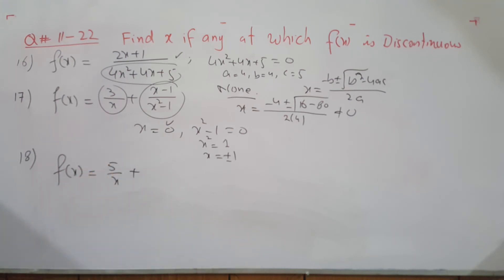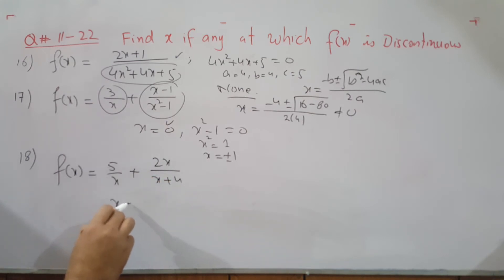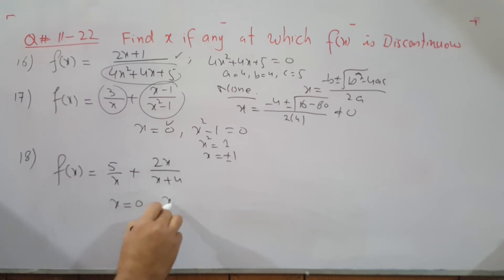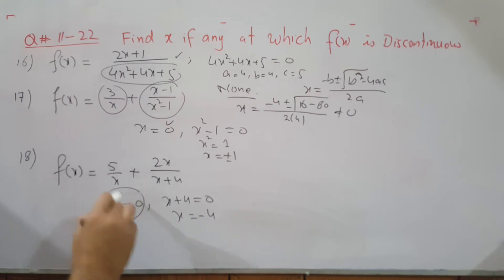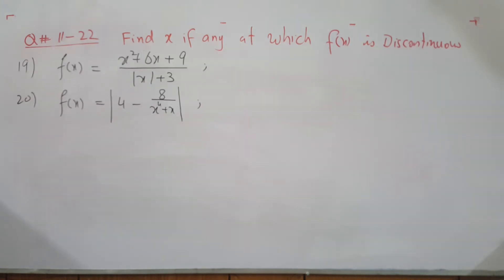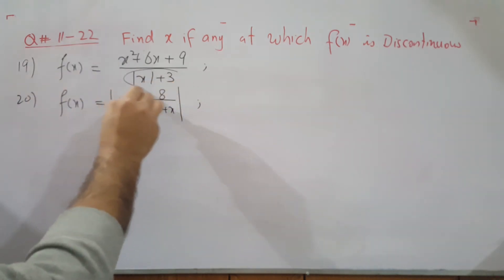Question 18: similarly with two terms — 5/x and 2x/(x+4). The first is discontinuous at x equals 0, and the second has x+4 equals 0, giving x equals −4. So the function is discontinuous at x equals 0 and x equals −4.